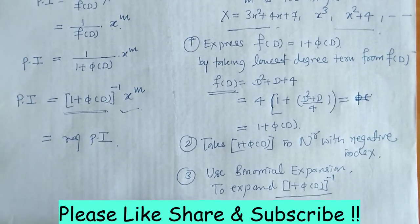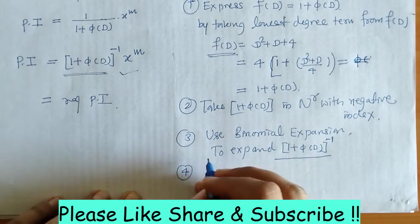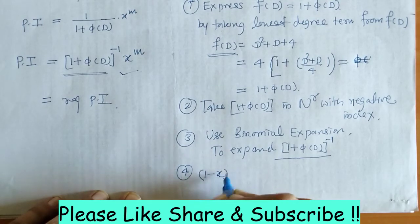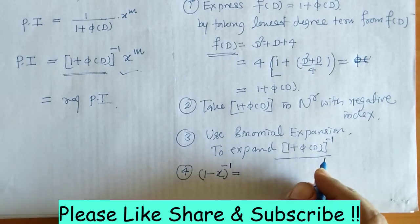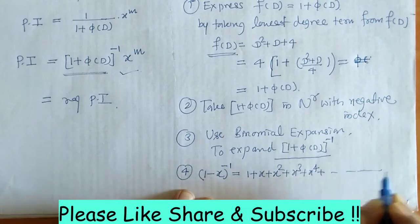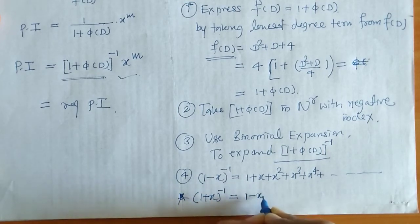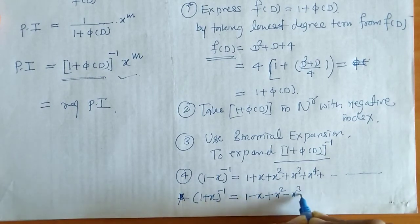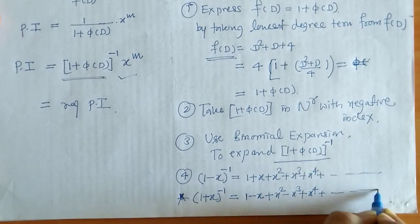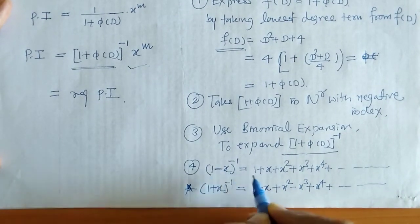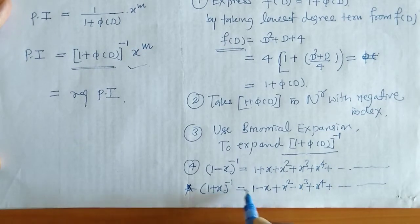We will write down which binomial expansions to use. For (1 minus x) raised to minus 1, all terms have a plus sign. For (1 plus x) raised to minus 1, the expansion is 1 minus x plus x squared minus x cubed plus x raised to 4, and so on — with alternating plus and minus signs.